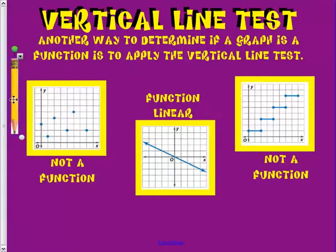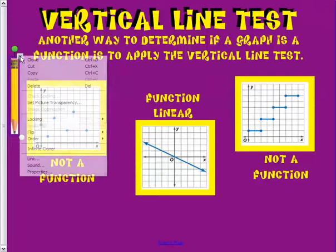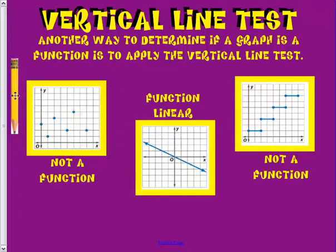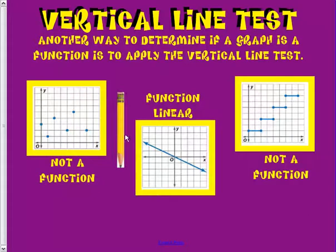For example, if I use this pencil, here it's only in one spot. Here it's only in one spot. Here it's only in one spot. Here, here, and here. I'm not going over two dots with my pencil ever. So technically, even though it looks like it wouldn't be, it is a function.